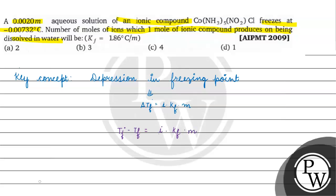tf naught is zero degrees Celsius, minus of minus 0.00732 degrees Celsius. Kf is 1.86 degrees Celsius per molal, and molality is 0.0020 molal. The molality units cancel out.